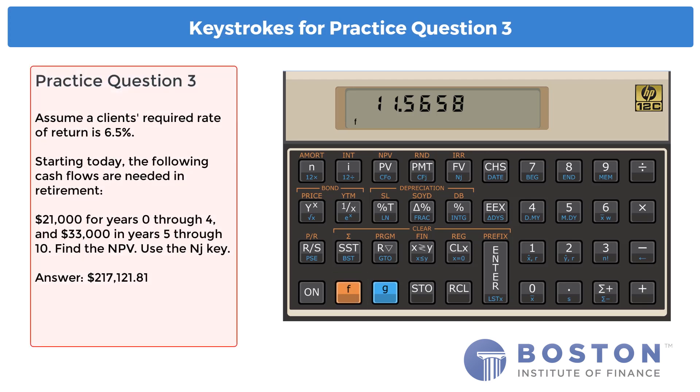Practice question 3. Clear registers. Enter 21,000, press prefix G, and that's entered into CF0. Enter 21,000 again, press prefix G, and that is entered into CFJ. Now, enter 4 and prefix G, and press NJ. Next, enter 33,000, prefix G, entered into CFJ. Enter 6 and prefix G, and press NJ. The interest is 6.5%, which is entered into the register I. The final step is prefix F for NPV.